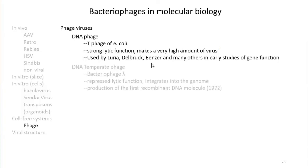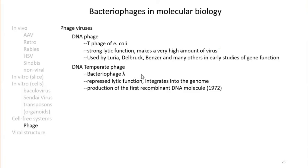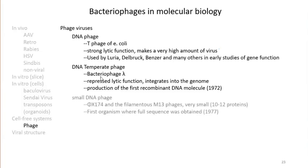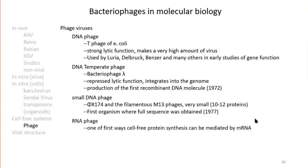Almost opposite to lytic phages is the temperate phage, most famously bacteriophage lambda, which represses lytic function and instead integrates into the genome, entering a lysogenic phase where it stays dormant. Lambda was involved in producing the first recombinant DNA molecule in 1972. There are also small DNA phages — some with as few as 10 to 12 proteins — the first organisms to have their complete sequence obtained, which was technically important at the time. RNA phages were also one of the key systems demonstrating cell-free protein synthesis mediated by mRNA.